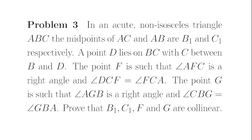The point F is such that angle AFC is a right angle, and angle DCF equals angle FCA. The point G is such that angle AGB is a right angle, and angle CBG equals angle GBA. Prove that B1, C1, F and G are collinear.